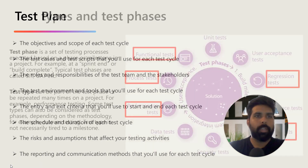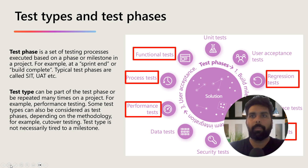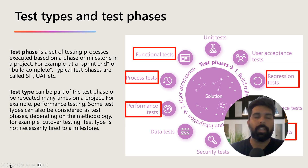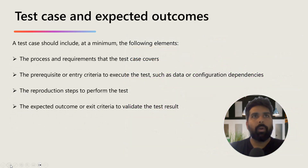Moving further in the slides — this is from my previous video — these are the different test types and test phases during a project, and the highlighted ones are the typical test types a Functional Consultant needs to perform. Your test plan can be created for each of these test types and phases, and you can also have multiple test plans for each test type, such as cycle 1, cycle 2, and so on. When executing a test plan, it is done through test cases and their expected outcomes.